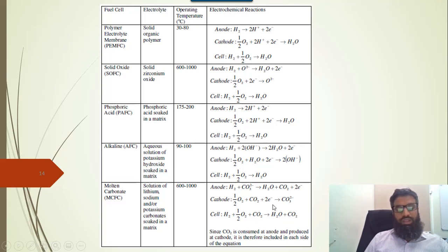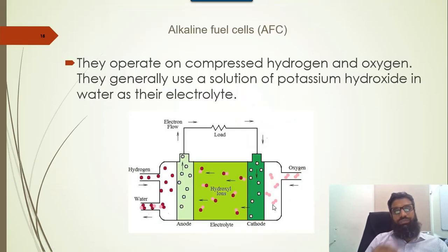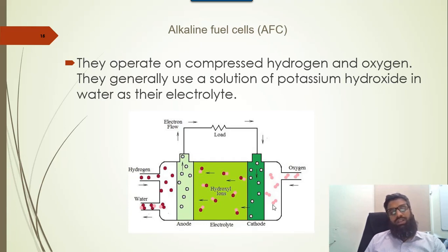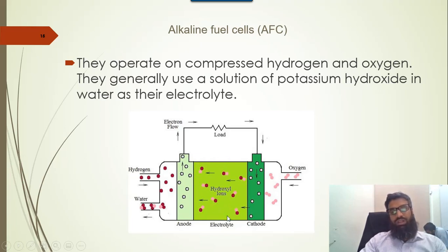This is the basic composition of the alkaline fuel cell. They operate on compressed hydrogen and oxygen and generally use a solution of potassium hydroxide in water as an electrolyte. Hydrogen is the input, and there is an anode and a cathode. The major difference between different types of fuel cell is basically the electrolyte. For this case the electrolyte carries hydroxide ions.